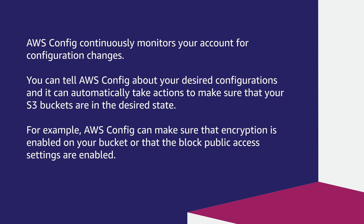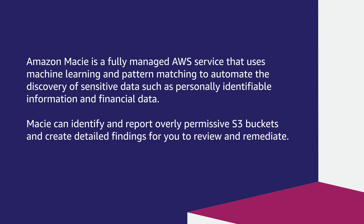AWS Config continuously monitors your account for configuration changes. You can tell AWS Config about your desired configurations and it can automatically take actions to make sure that your S3 buckets are in the desired state. For example, AWS Config can make sure that encryption is enabled on your bucket or that the block public access settings are enabled. Amazon Macie is a fully managed AWS service that uses machine learning and pattern matching to automate the discovery of sensitive data such as personally identifiable information and financial data. Macie can identify and report overly permissive S3 buckets and create detailed findings for you to review and remediate.